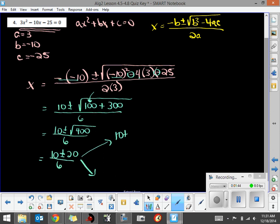I've got to do 10 plus 20 and divide it by 6, and I have to do 10 minus 20 and divide it by 6. If I do 10 plus 20, it's 30 divided by 6, so one of my final answers is 5.